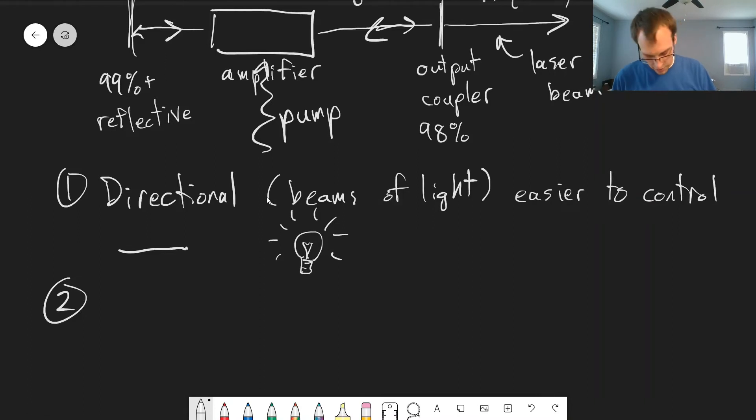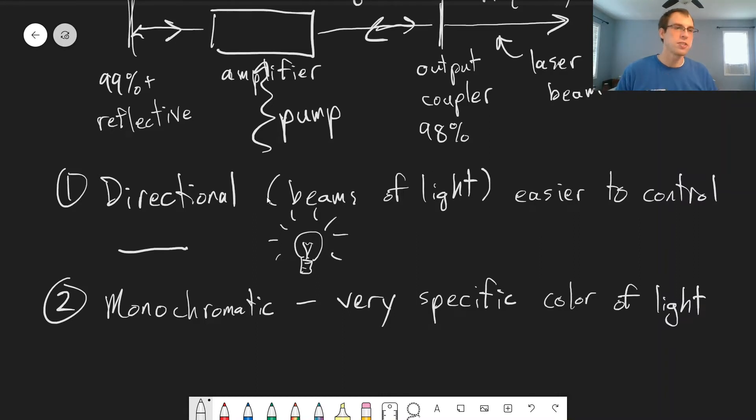Two. Laser light is monochromatic. So lasers generate light that is, instead of like a light bulb where you get the entire spectrum, the whole rainbow, if you have a light bulb, you get only one specific color out of a laser. So you get red light or green light, and it's not even just red or green. It's a specific wavelength of light.